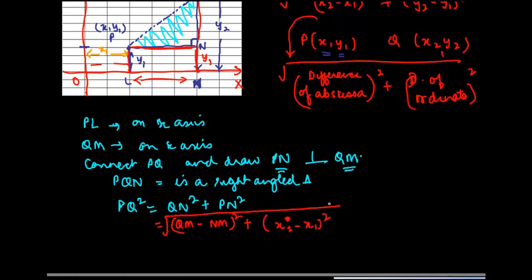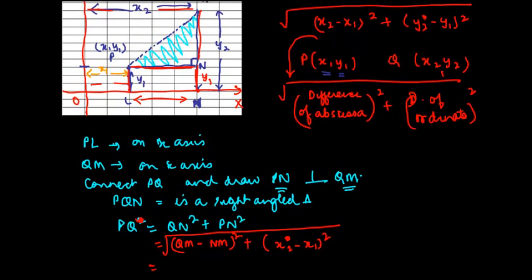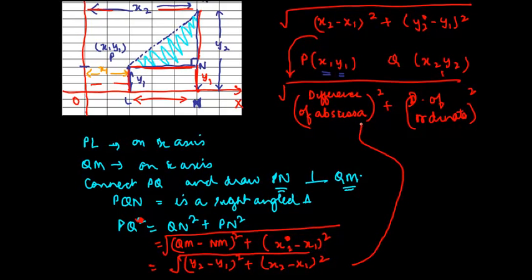And if you have to remove the square root, we just take a square here. So QM is what? The length of QM is equal to Y2 minus NM which is equal to Y1 plus X2 minus X1. And hence the derivation of this formula.